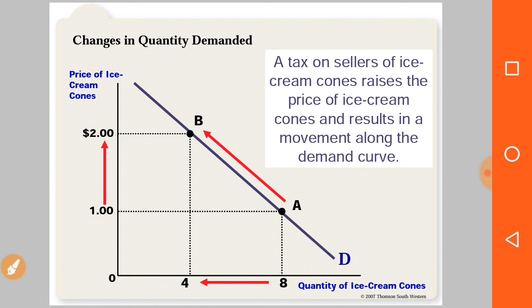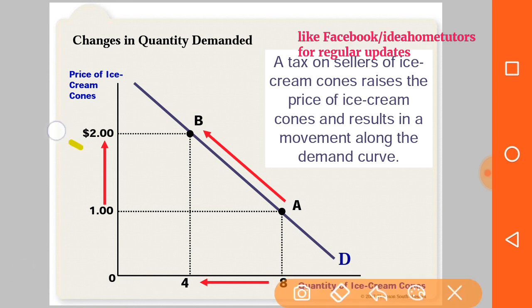For example, a tax on sellers of ice cream cones raises the price of ice cream cones, and as a result there is a movement along the demand curve due to the price change. There could be many reasons for an increase in price, and all those situations lead to movement along the curve. If price increases, there is an upward movement; if price decreases, there is a downward movement. For instance, if price falls from two dollars to one dollar, movement goes from B to A and quantity demanded increases from 4 to 8.